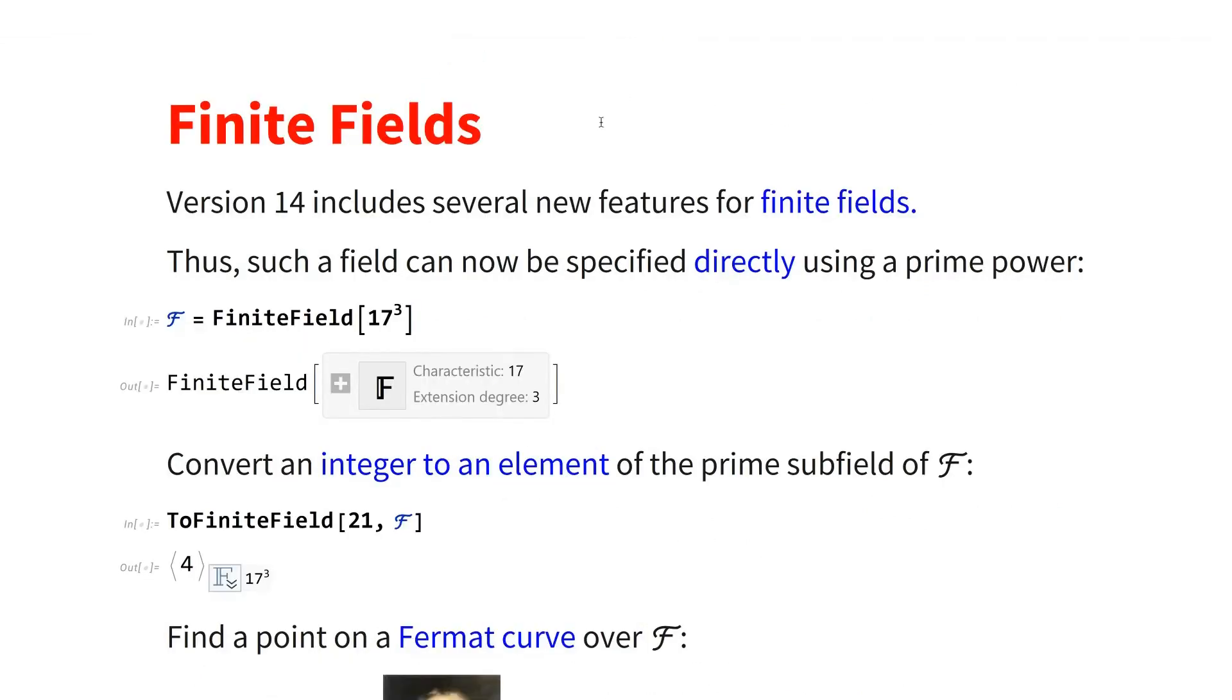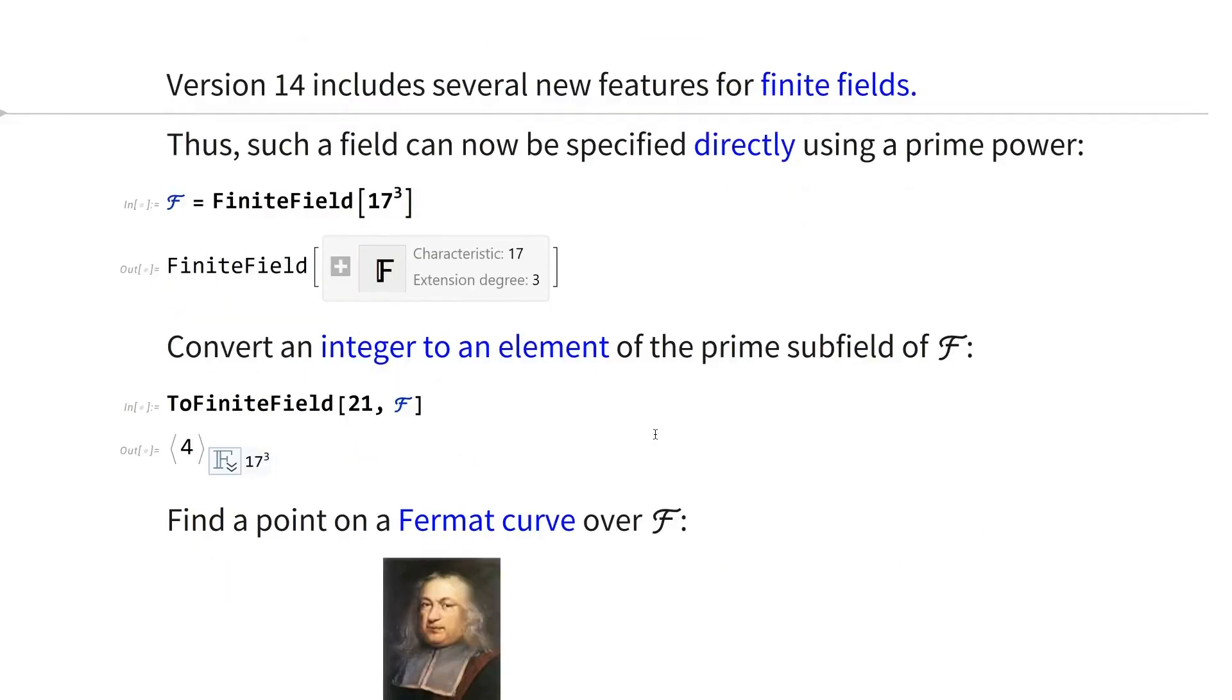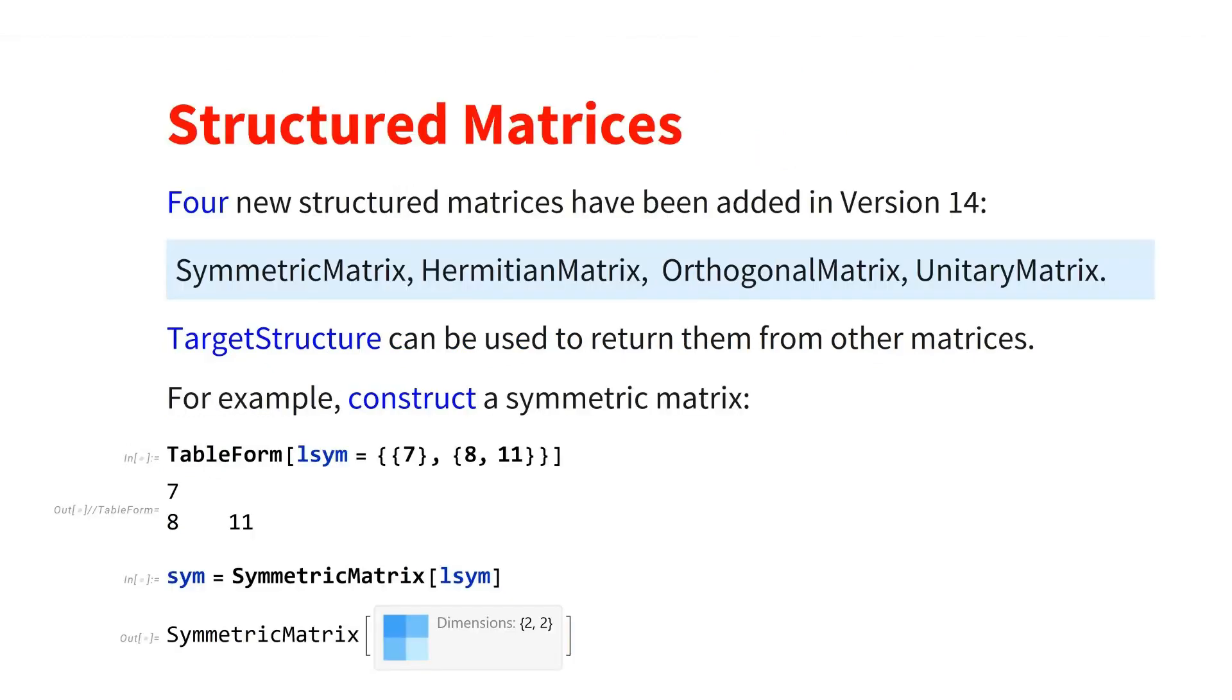So what are finite fields? Well, roughly speaking, they generalize clock arithmetic. How do you generate elements of this finite field? Well, if you take an integer, then in version 14, you can use ToFiniteField to generate an element of the field.